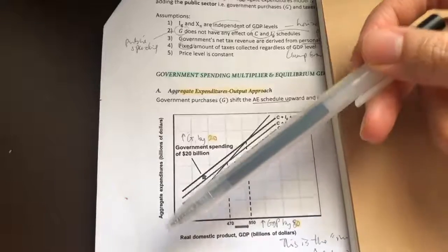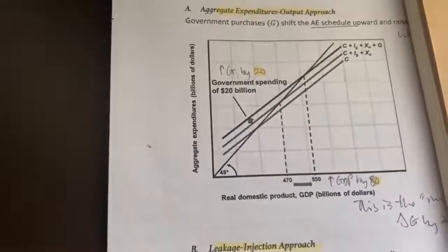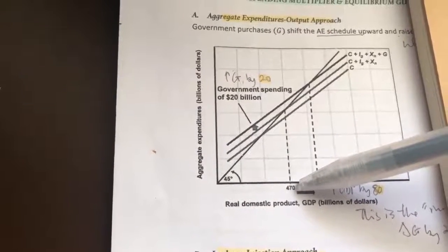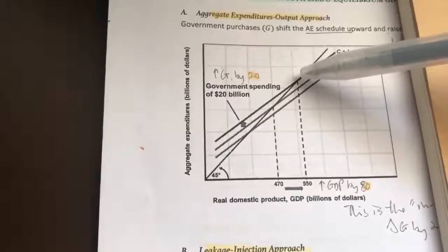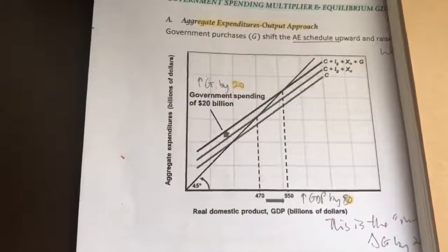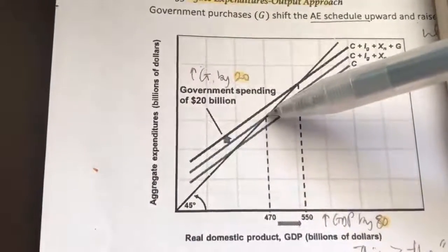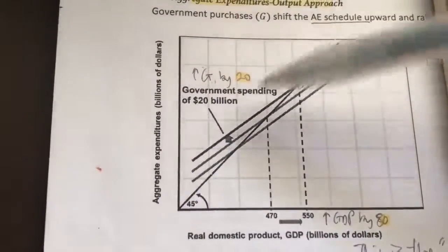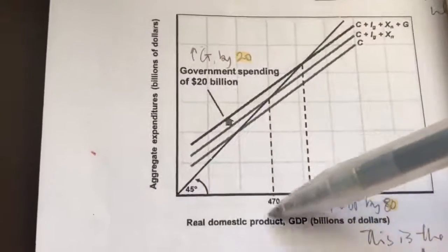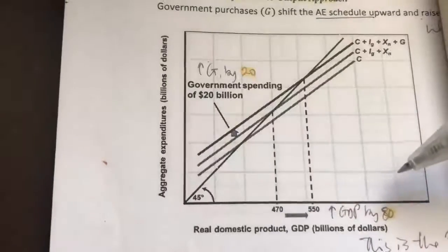To compare: initially, when the economy was private and closed, our equilibrium GDP was 470 billion. But now that our economy is mixed and open, we have a new intersection point, so our new equilibrium GDP is 550 billion. From the initial point, when it shifts upward — meaning we included the G component — government spending increases by 20 billion, and as a result real GDP increases by 80 billion. This is the multiplier effect.